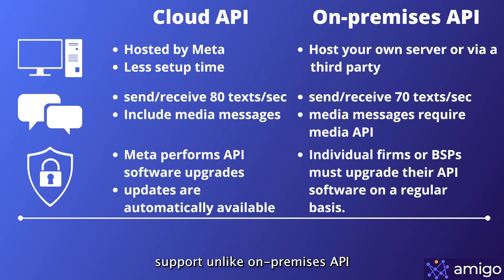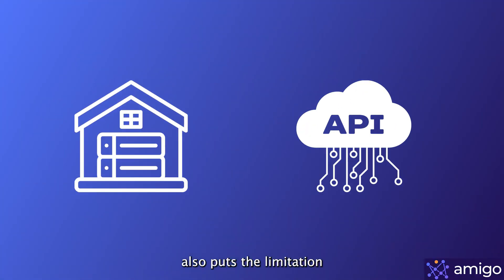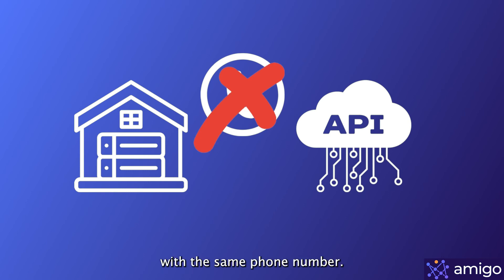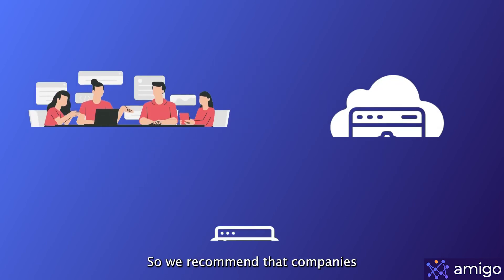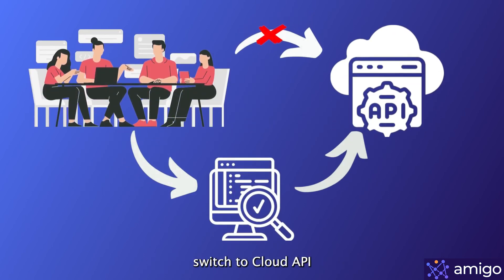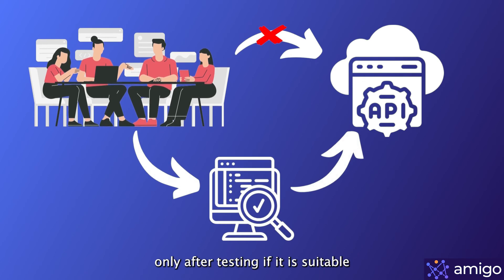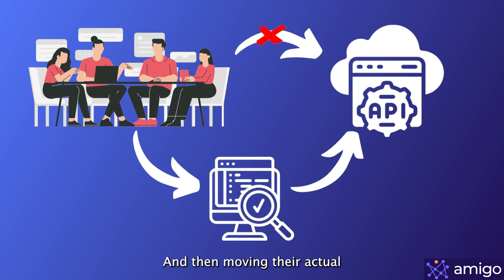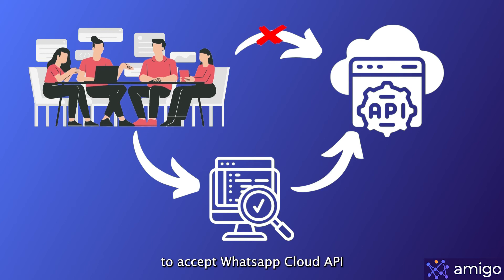Cloud API does not have sticker support, unlike On-Premises API, but they plan to add this feature in the near future. Meta also puts a limitation that businesses cannot use On-Premises API and Cloud API with the same phone number. We recommend that companies switch to Cloud API only after testing it with a new test number, and then moving their actual phone numbers when they're confident and ready.